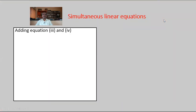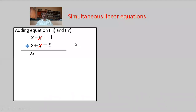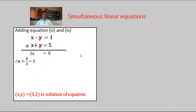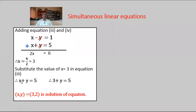Adding equations 3 and 4: x minus y equals 1, plus x plus y equals 5. Minus y plus y cancels, giving 2x equals 6. So x equals 6 upon 2 equals 3. Substitute x equals 3 in equation 3: x plus y equals 5, so 3 plus y equals 5, giving y equals 5 minus 3 equals 2. Hence the solution is x equals 3 and y equals 2.